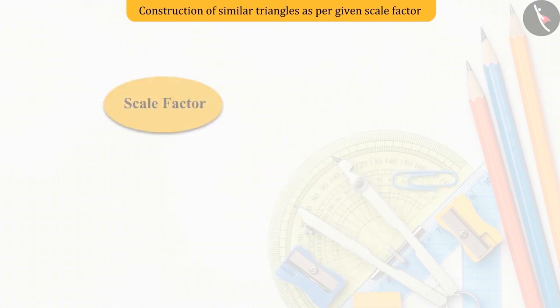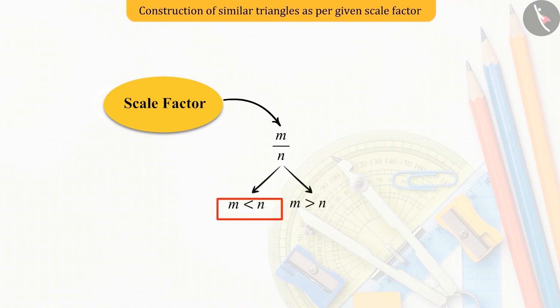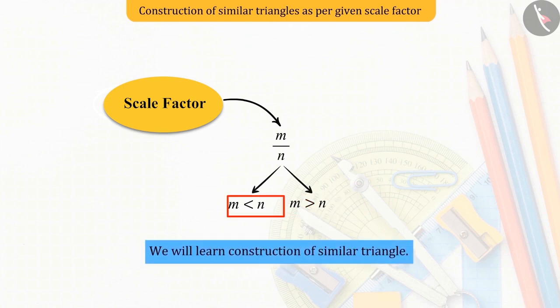Now, if we say that the scale factor between any two similar triangles is M upon N, then two situations arise here. First, when M is less than N. And second, when M is greater than N. Today, we will learn the construction of similar triangles in the first situation.